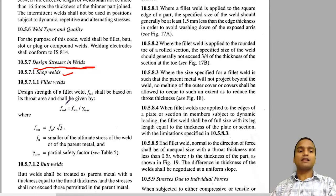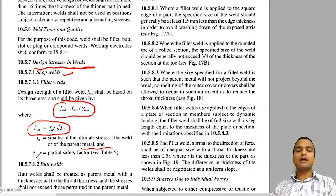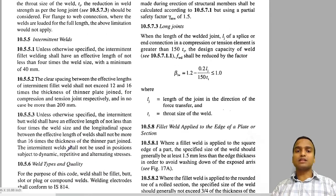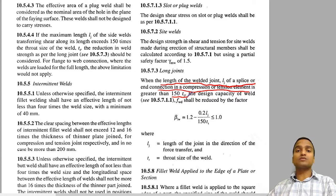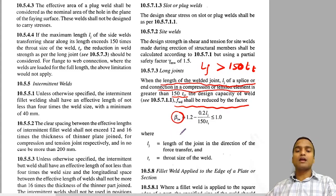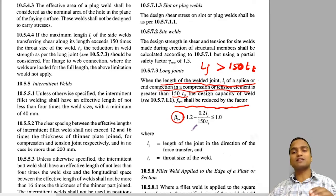Design stresses in welds: f_wd = f_wn / γ_mw, where f_wn = f_u / √3, f_u being the smaller of the ultimate stress of the weld or parent metal, and γ_mw is the partial safety factor. An important provision: if the length of a welded joint L_j in compression or tension exceeds 150 times the throat thickness, f_wd shall be reduced by the factor β_lw = 1.2 − 0.2 × (L_j / (150 × t_t)). This is similar to the β_lj reduction factor in the shear capacity of bolted connections.